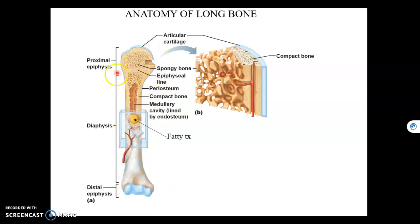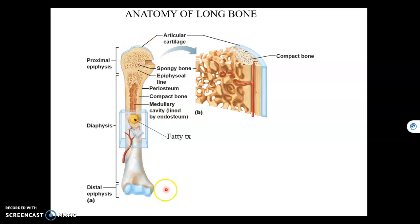Here's an epiphyseal line. If this was a child, it would be an epiphyseal plate, and hyaline cartilage would span the plate. There's your articular cartilage, which is the hyaline cartilage at the ends of long bones.